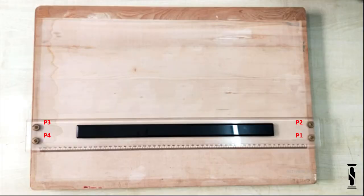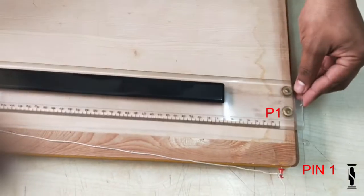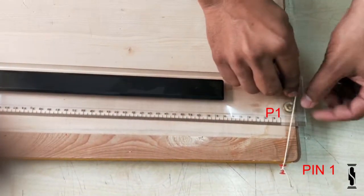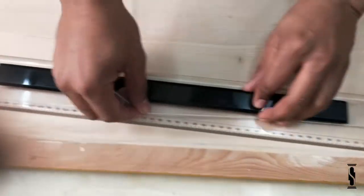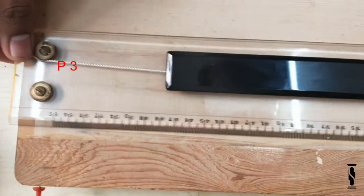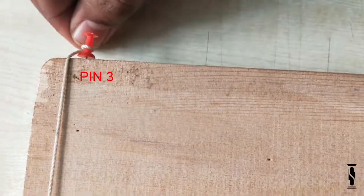Here we have 4 pulleys P1, P2, P3, P4. So take a string around the pulley P1 from outward direction and stretch it up to the pulley P3. Again, roll the string around the pulley P3 and tie it with pin 3, which is diagonally opposite to pin 1.